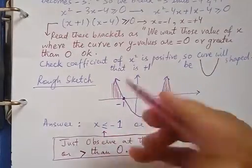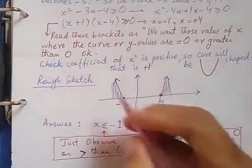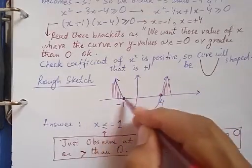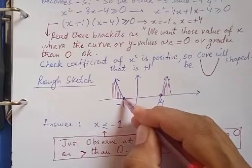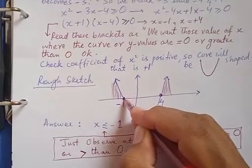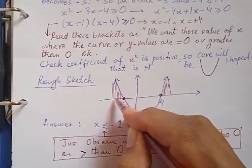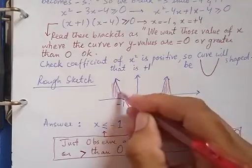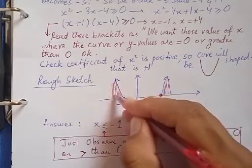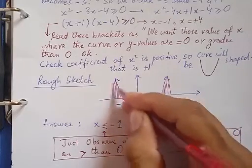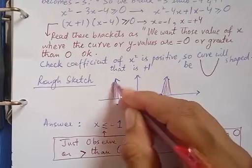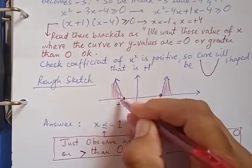If I stand on minus one on the x-axis, y is always zero. If I go towards the left of minus one, the y-values are positive — y equals zero at minus one and y is positive to the left. So I need those values of x on the left side of minus one.